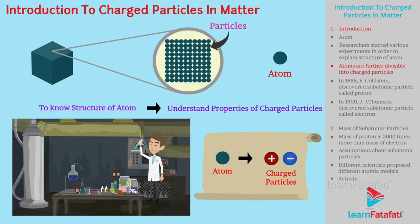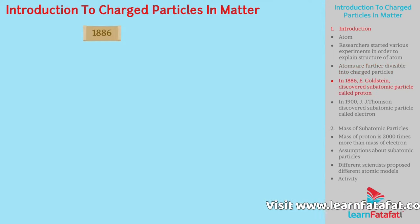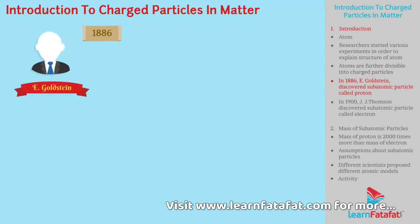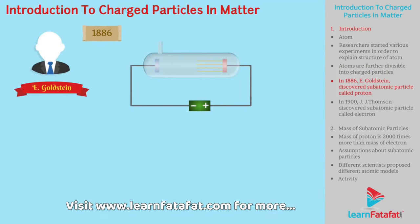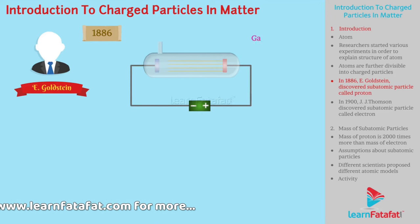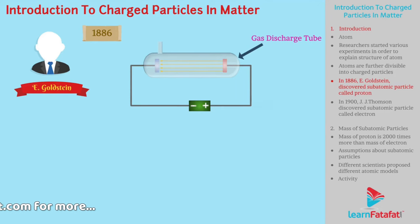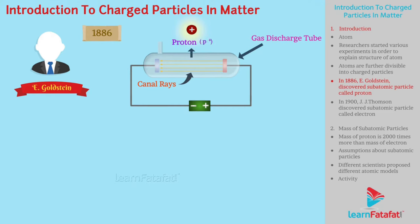Researchers began to explore more about these charged particles. In 1886, E. Goldstein discovered new positively charged radiations in a gas discharge tube. He called them canal rays. This led to the discovery of the subatomic particle called proton, denoted by P+.